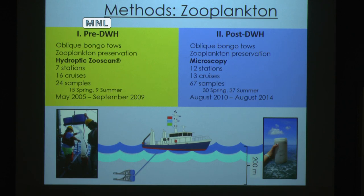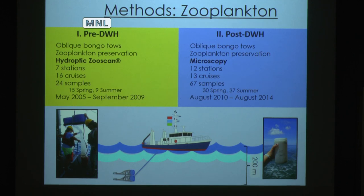As for the methods, these zooplankton were collected identically on the boat using a bongo tow that was towed down to 200 meters, or two to three meters off the floor if it was shallower than 200 meters. One major difference is that the pre-spill zooplankton was processed using the ZooScan, whereas the post-spill data was analyzed using more traditional microscopy for identification and enumeration.